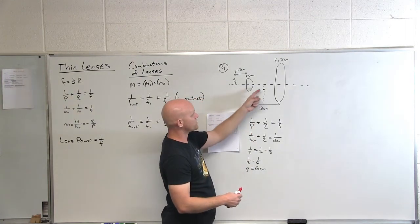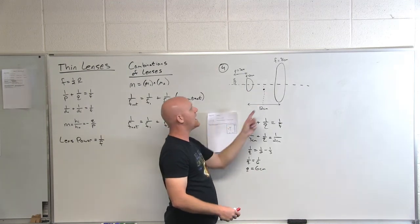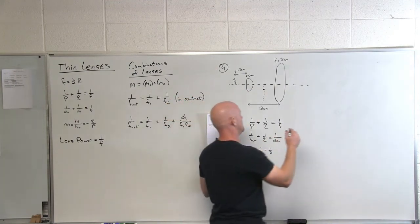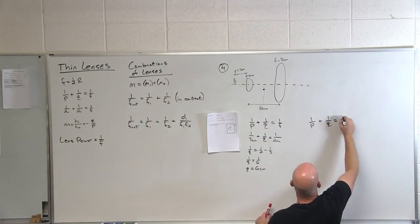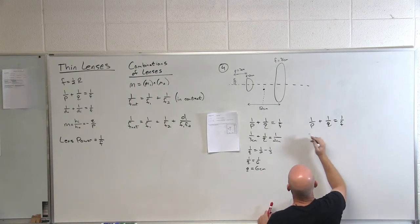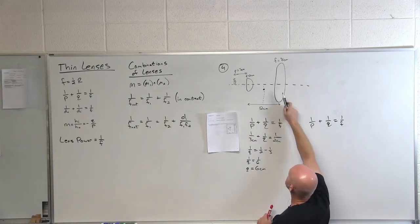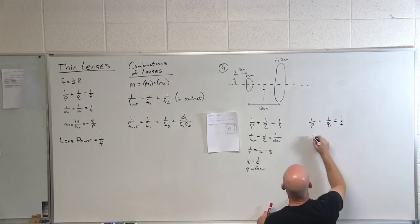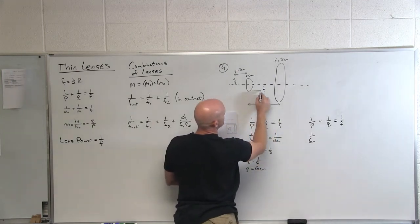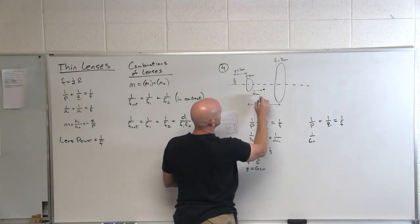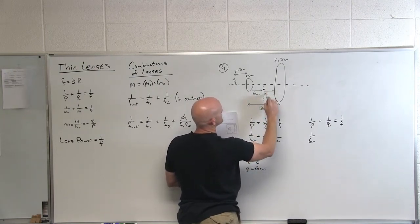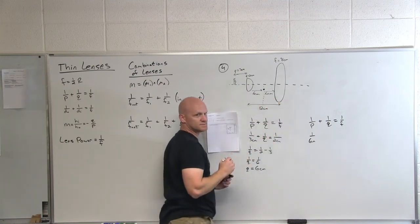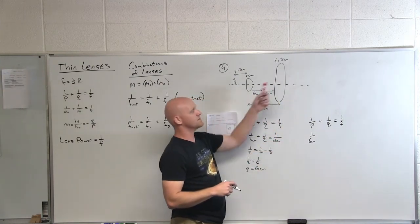And that image where the light rays really converge right there is going to be the object for the next lens. And so we'll set up the same exact set of equations here. In this case, how far is the new object relative to? So if this image distance was six centimeters out of the total distance of 12, then this distance is also going to be six centimeters as well. And that's our new P for the next guy.